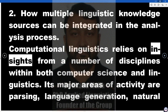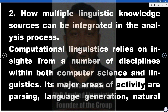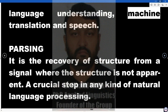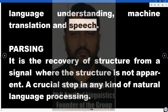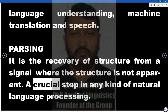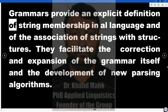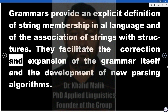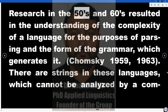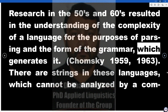Computational linguistics relies on insights from a number of disciplines within both computer science and linguistics. Its major areas of activity are parsing, language generation, natural language understanding, machine translation, and speech. Parsing is the recovery of structure from a signal where the structure is not apparent — a crucial step in any kind of natural language processing. Grammars provide an explicit definition of string membership in a language and of the association of strings with structures. They facilitate the correction and expansion of the grammar itself and the development of new parsing algorithms.